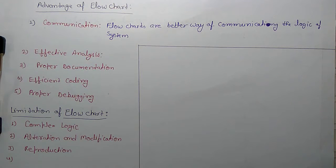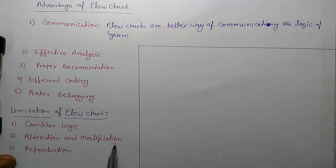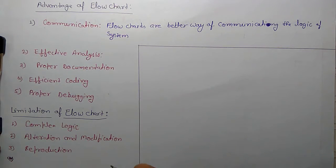There are some limitations of flowchart like complex logic. Sometimes the program logic is quite complicated. In that case, flowchart becomes complex and clumsy for large systems. And alteration and modification. If you have created some flowchart and you want to alter it or modify it, it's very complex. This means you have to redesign the flowchart. That is limitation of flowchart.